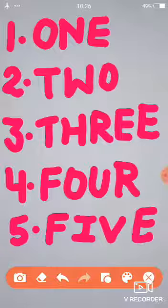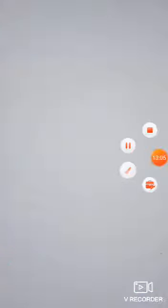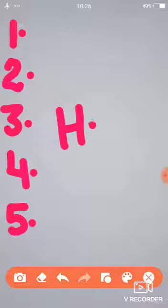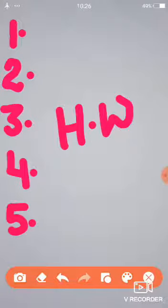Okay children. Today's homework is write the spelling of 1, 2, 3, 4, and 5. Write the spelling of 1, then 2, then 3, then 4, and after that 5. This is your homework. Make a video clip and send it to the school WhatsApp. Okay children, we will meet again. Bye-bye.